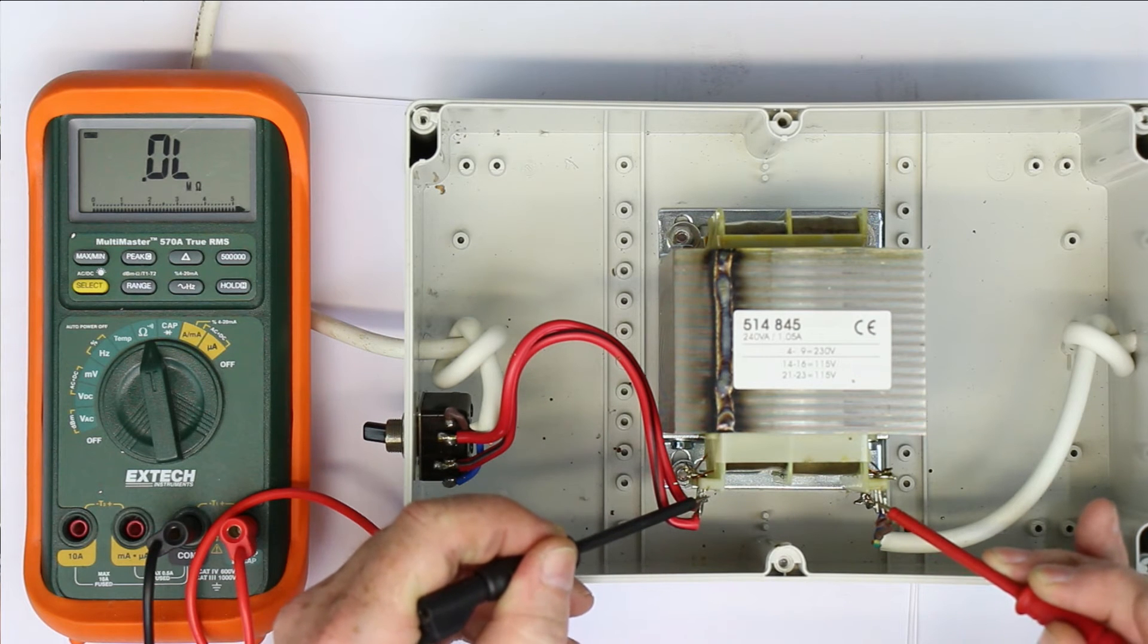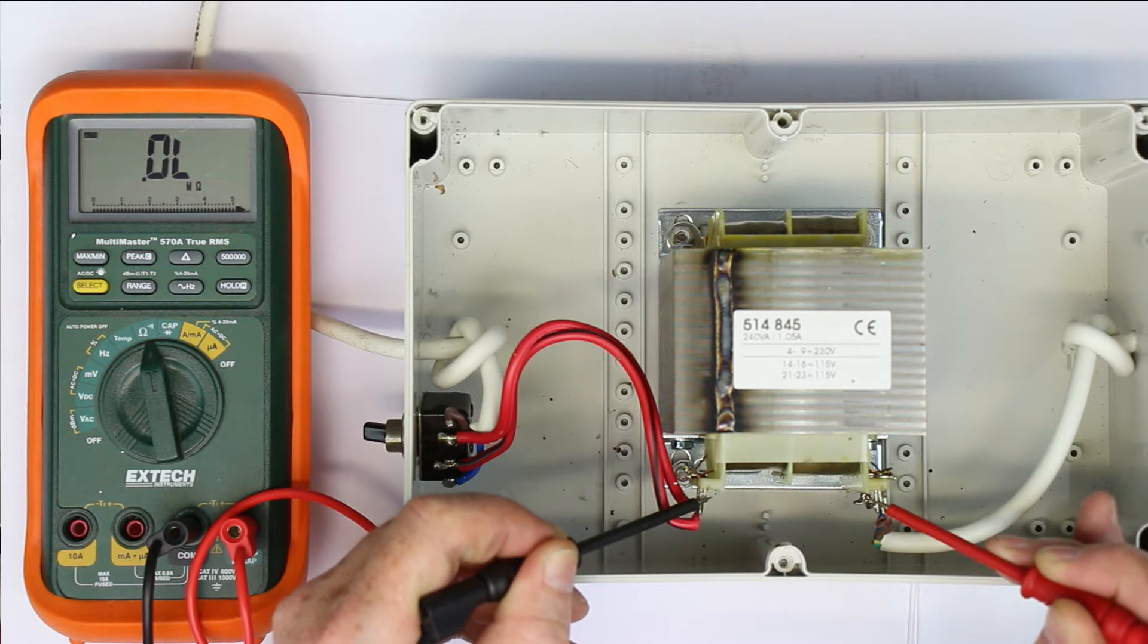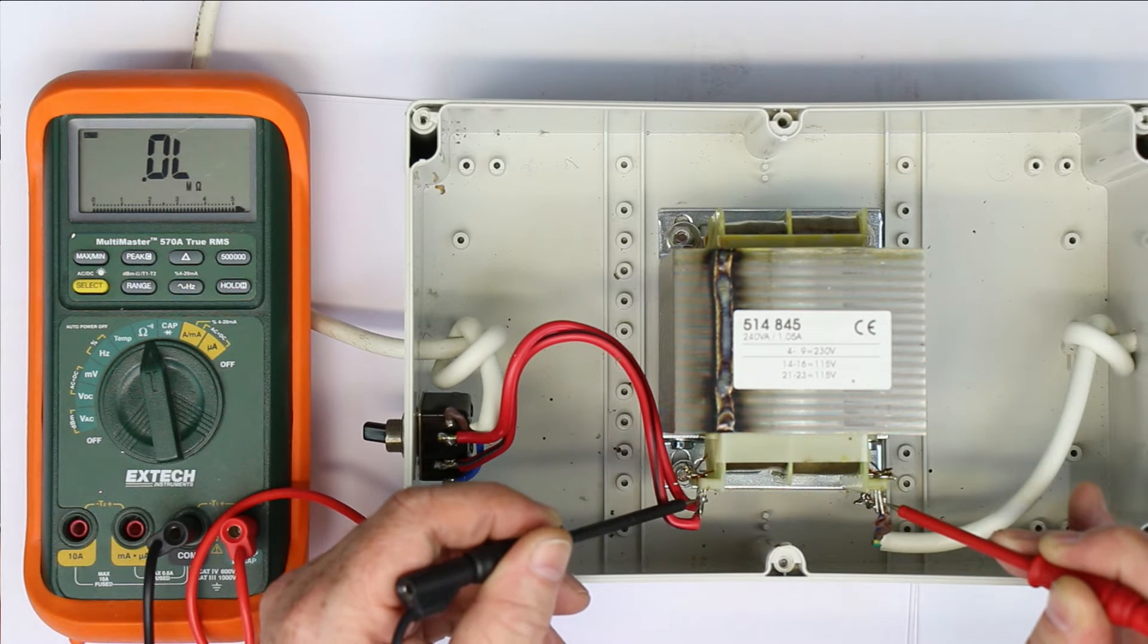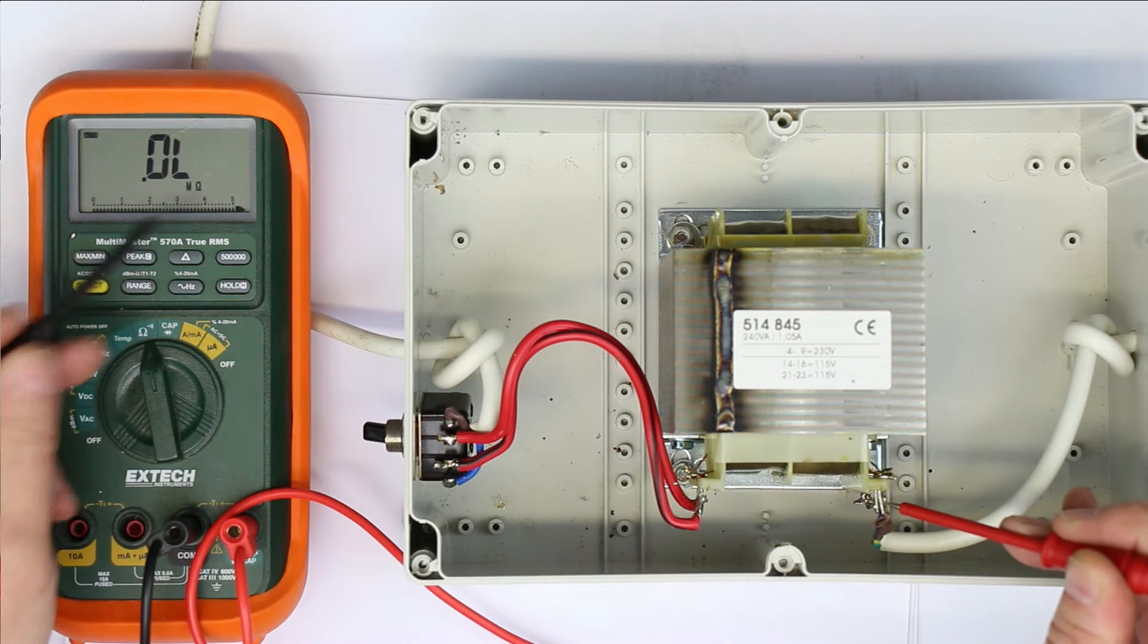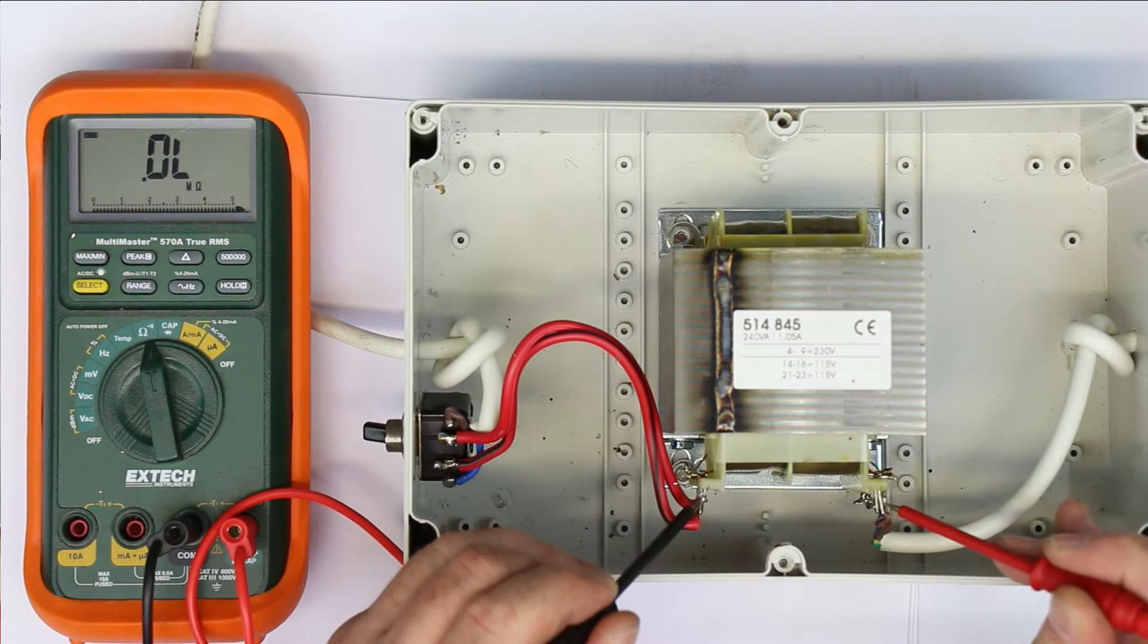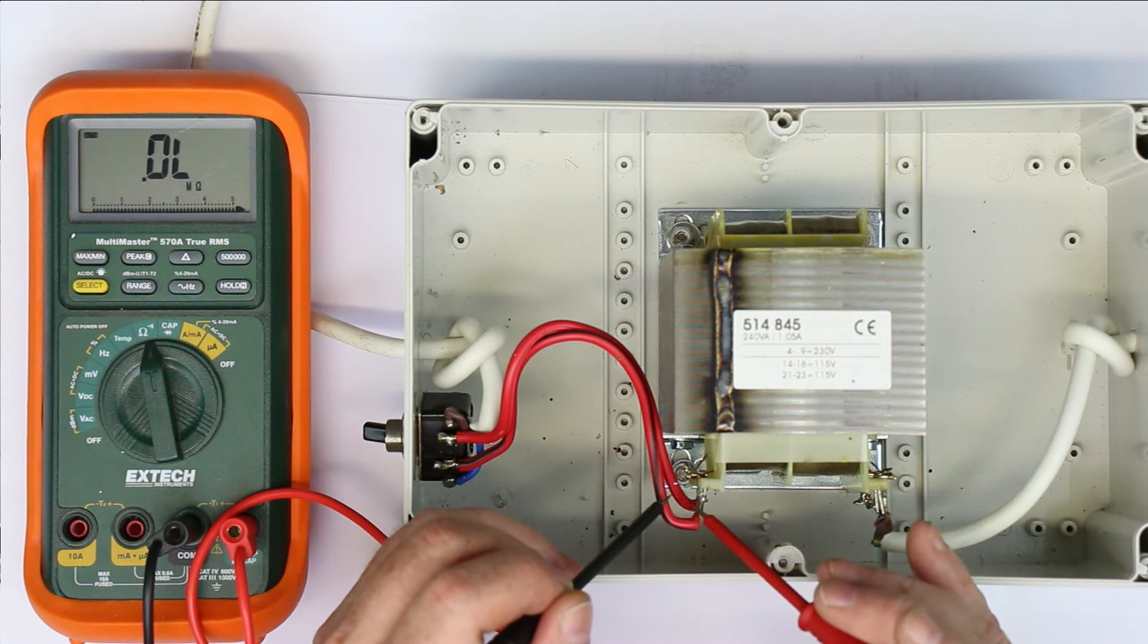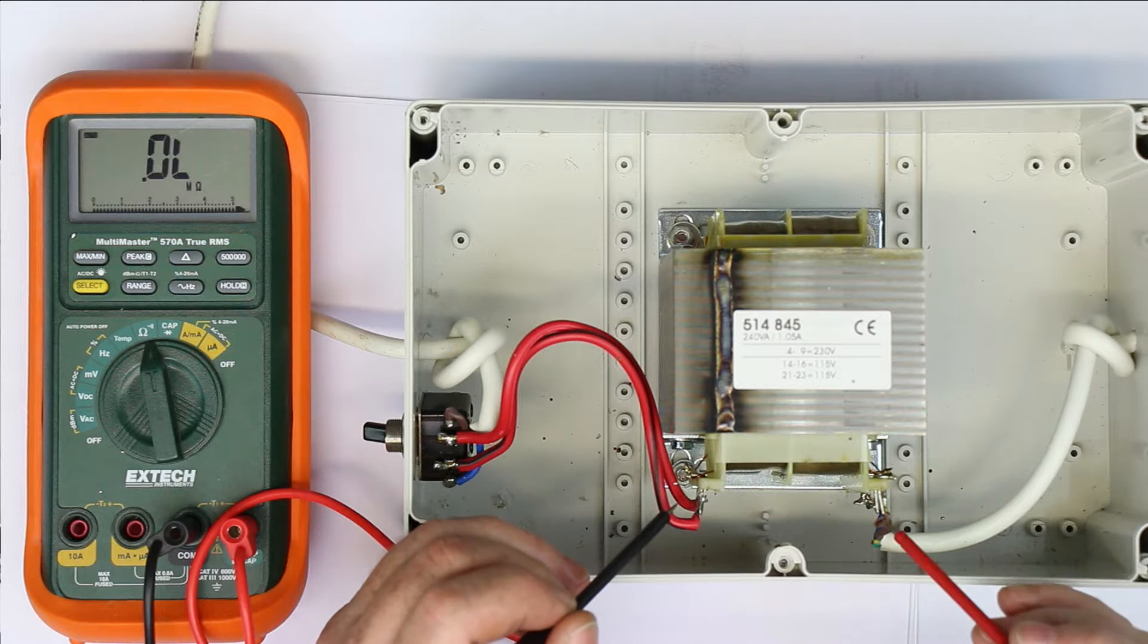We cannot measure any resistance, perhaps in the gigaohm range, but there is no conducting connection between primary and secondary side. As you can see here on the multimeter set to ohms range, it's above 60 megohms. So for DC current, there is no path from primary to secondary side.